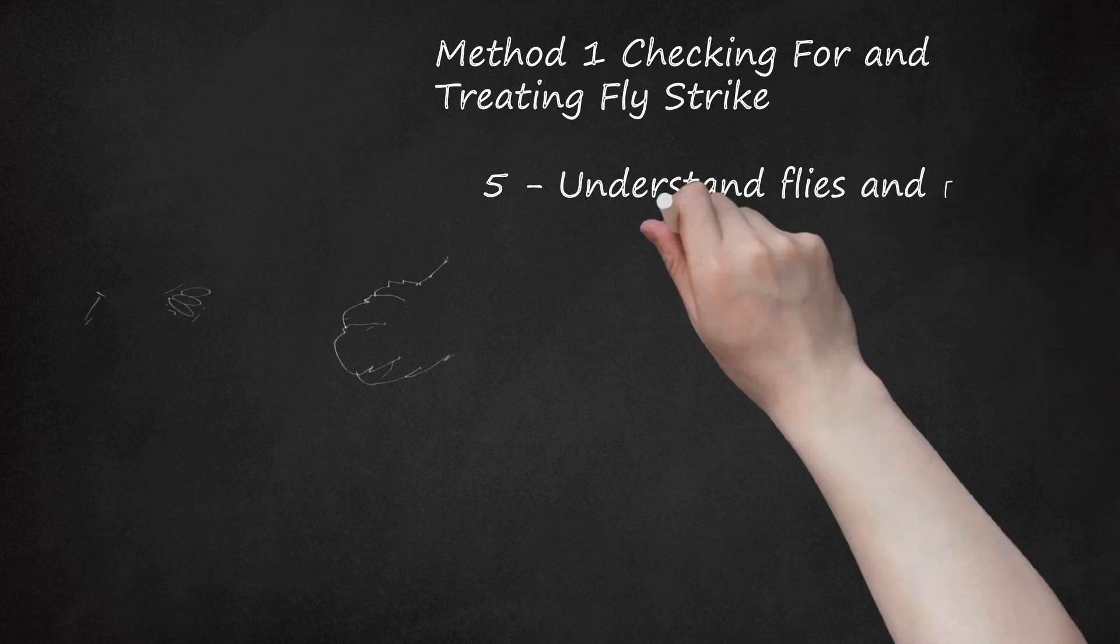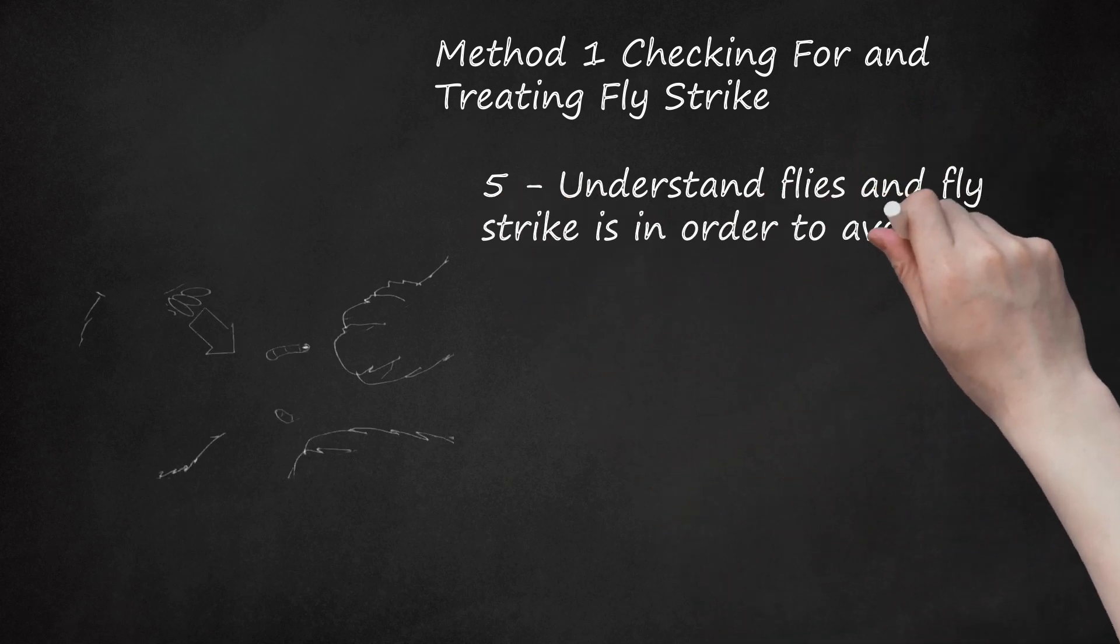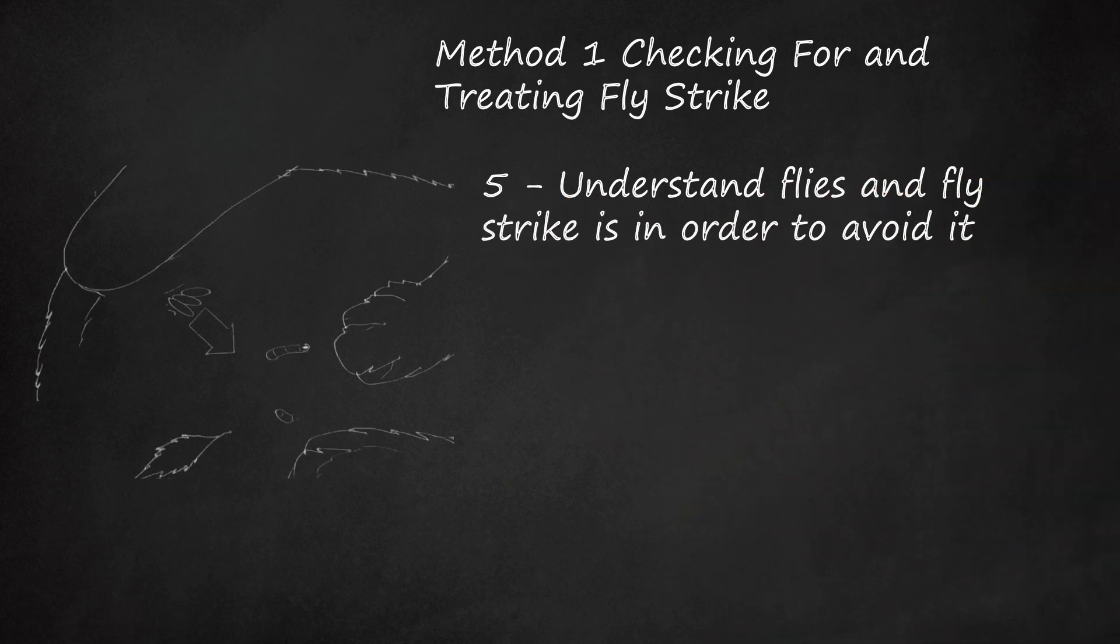5. Understand Flies and Fly Strike in order to avoid it. The fly life cycle involves the adult fly laying eggs. These eggs hatch out into maggots, and these maggots need to feed in order to grow and ultimately hatch out as adults.